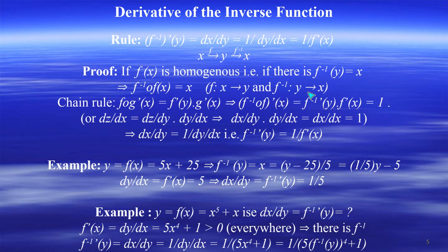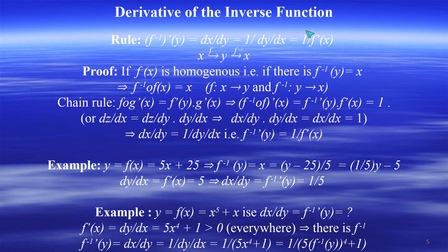The inverse function rule states: F minus 1 prime of Y, the derivative of the inverse function with respect to Y, equals dx/dy, which equals 1 over dy/dx, or 1 over F prime of X. In other words, the derivative of the inverse function is 1 over the derivative of the straight function. We must prove this using the chain rule.